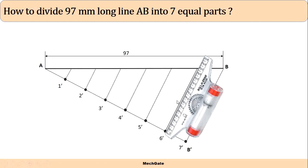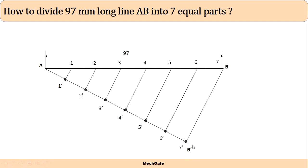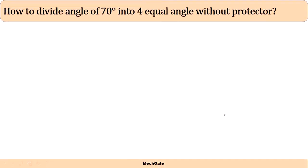What we are doing here is projecting point 7 dash onto our main line AB. Similarly, we project point 6 dash onto the main line at point 6. So all these inclined lines are projection lines. This way we can divide any line into some equal number of parts.